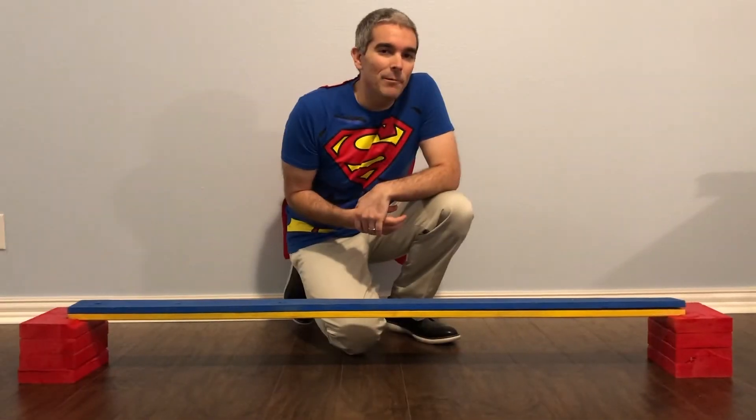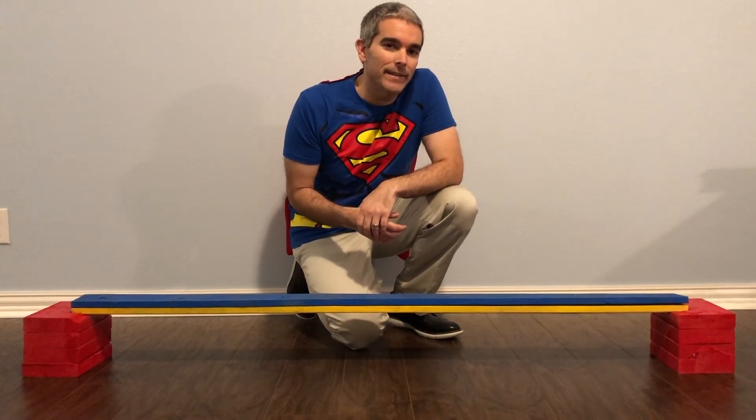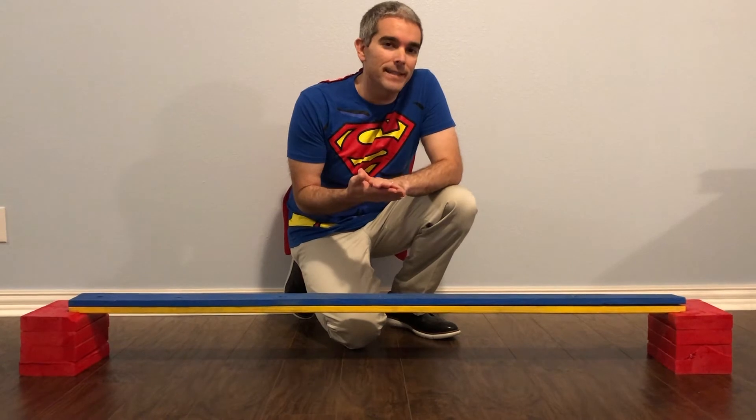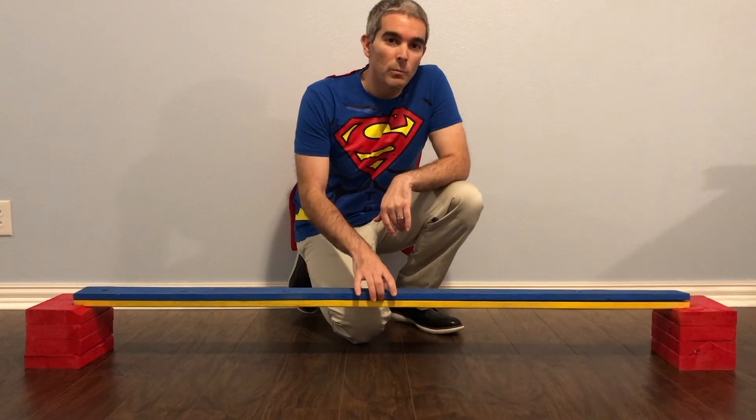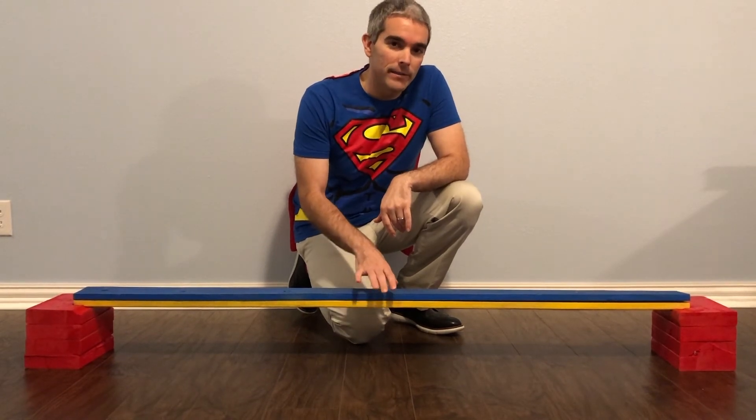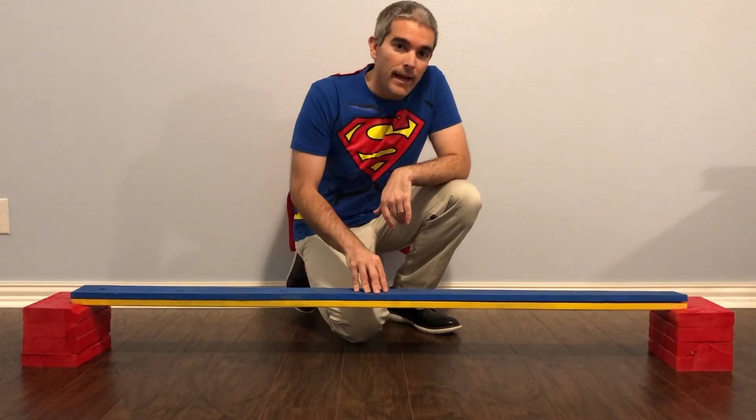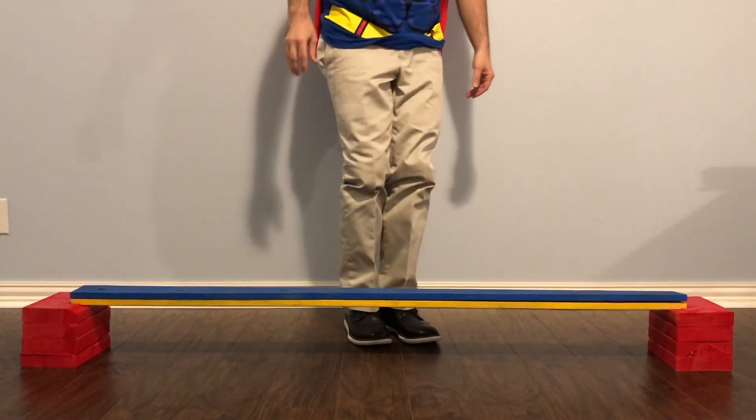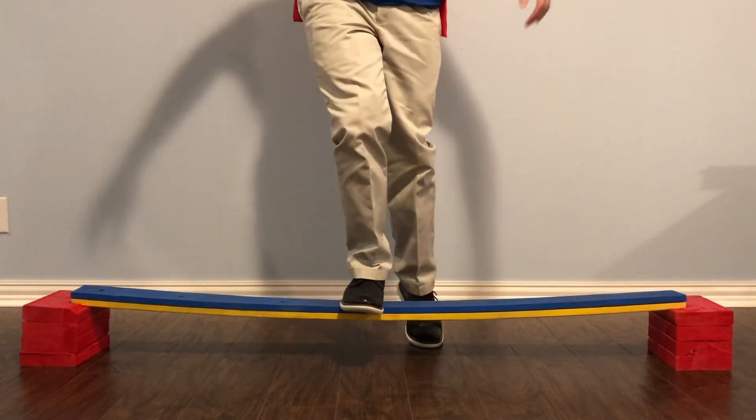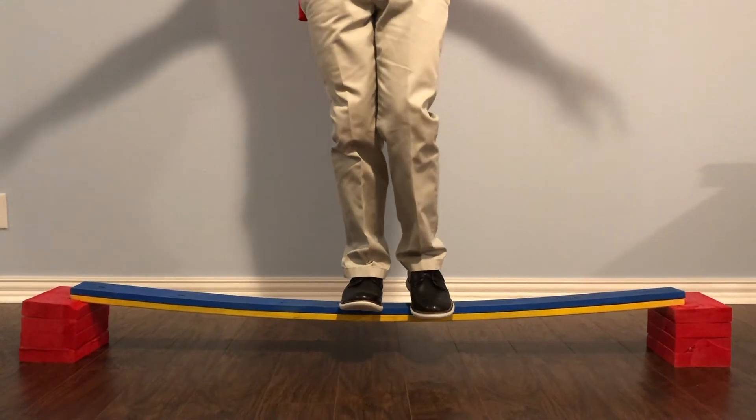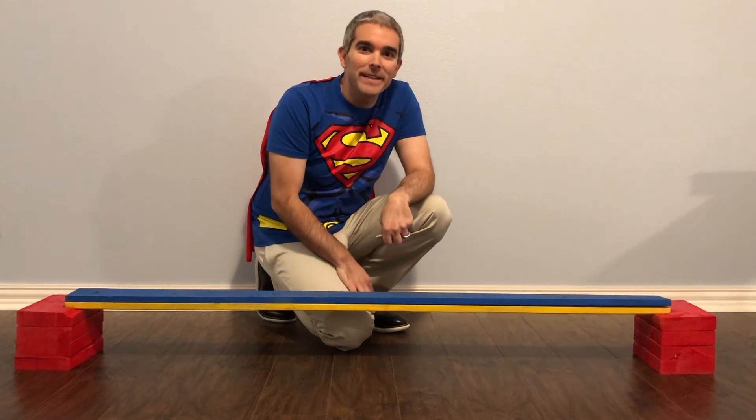In this example we're going to look at how we calculate the force acting on each connector in a system when we make a composite system. We have two 1x4 boards and we're going to put some load on them. Right now they're not connected, so I'm going to stand on the middle here. You can see it really deflects, it's really unstable. Well it's a good thing I can fly and I didn't fall into the abyss here.